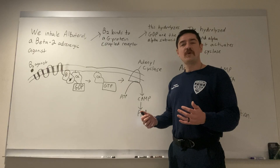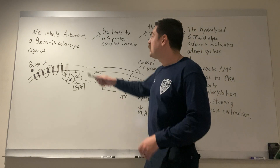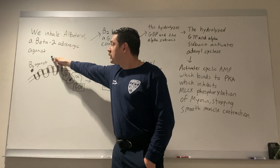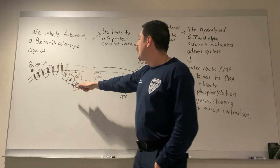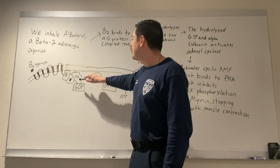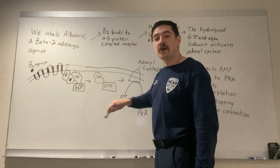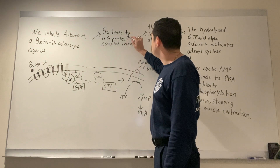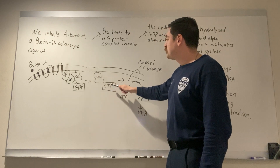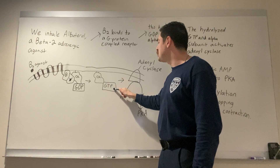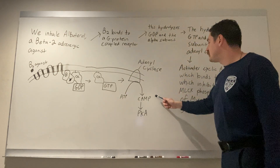Now that we understand how smooth muscle contracts, let's look at how albuterol causes smooth muscle relaxation. We inhale albuterol, which is a beta-2 adrenergic agonist. When we inhale a beta-2 adrenergic agonist like albuterol, it binds to a G-protein-coupled receptor on the smooth muscle exterior. There's an alpha subunit and a GDP. The beta-2 agonist binds here, hydrolyzing GDP from the alpha subunit, and converts it so the alpha subunit is dislodged by itself with GTP. The alpha subunit and GTP then bind to adenylate cyclase, which activates cyclic AMP.